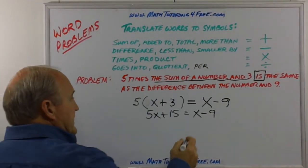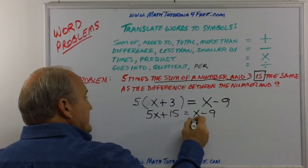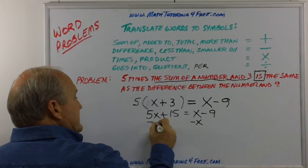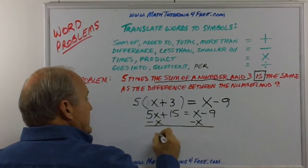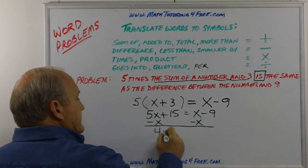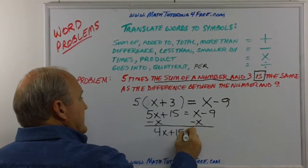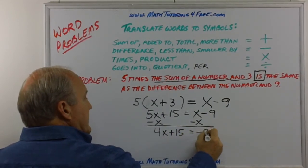Let's start by bringing this X over here. So if this is a plus X, we do just the opposite, so we subtract X from both sides. We now have 4X plus 15 equals negative 9.